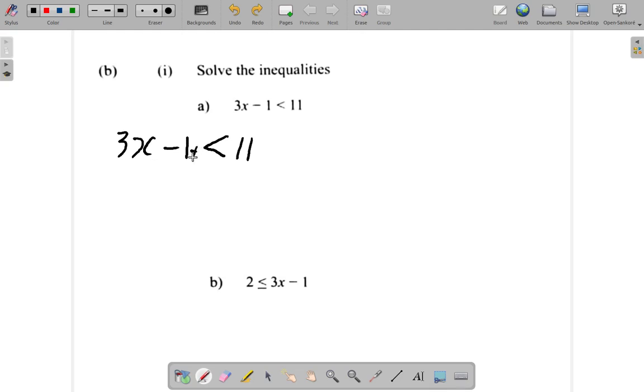If you add 1 here, negative 1 plus 1 is 0. So you have 3x alone on the left is less than. But if you add 1 to the left, you must add 1 to the right as well. So 3x is less than 11 plus 1 is 12.